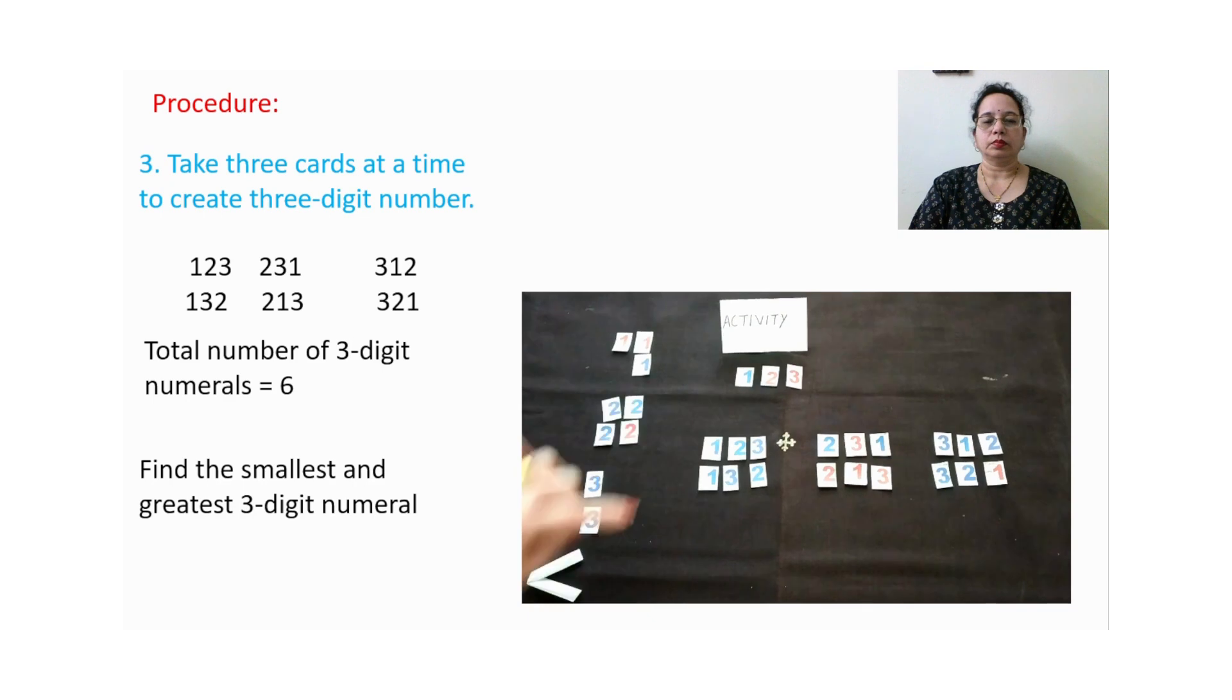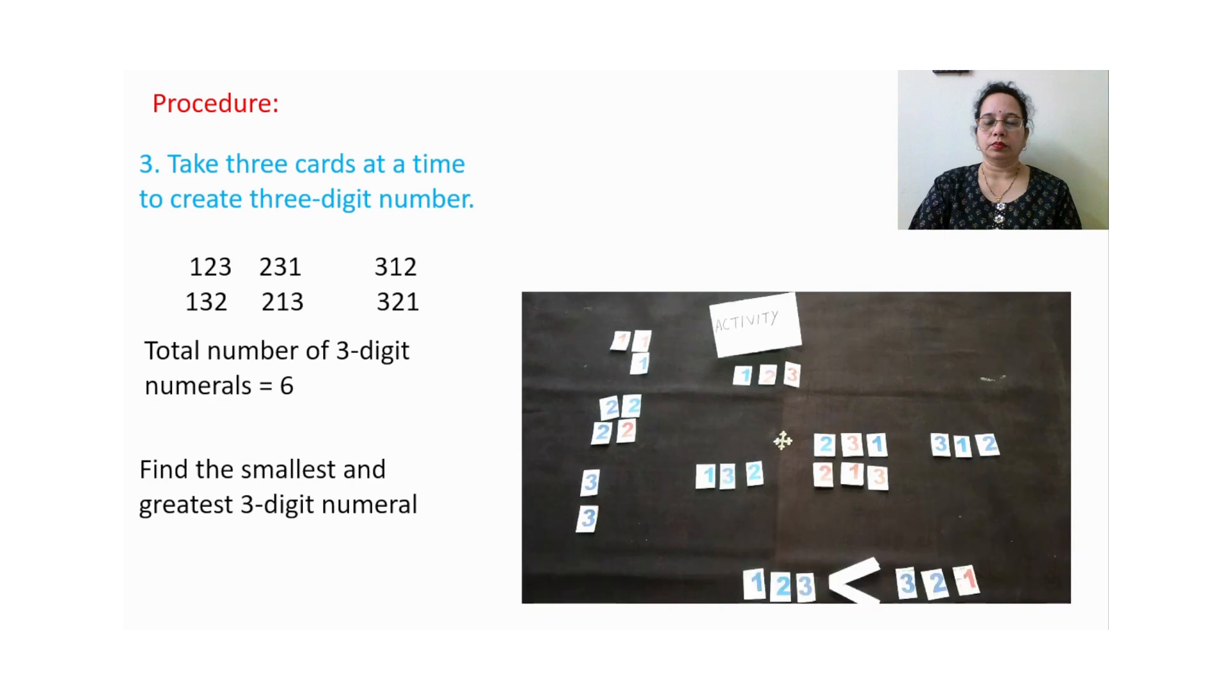So this way here I got 6 numbers 1, 2, 3, 4, 5, 6. The numbers are 123, 132, 231, 213, 312, 321. Now here we can do one more thing. Out of these 6 three digit numbers which one is the smallest number you can find out. So 123 is the smallest number. Now find out which one is the biggest number. So here biggest number is 321 and we can put here this sign. So 321 is the biggest number and 123 is the smallest number out of these 6 numbers.